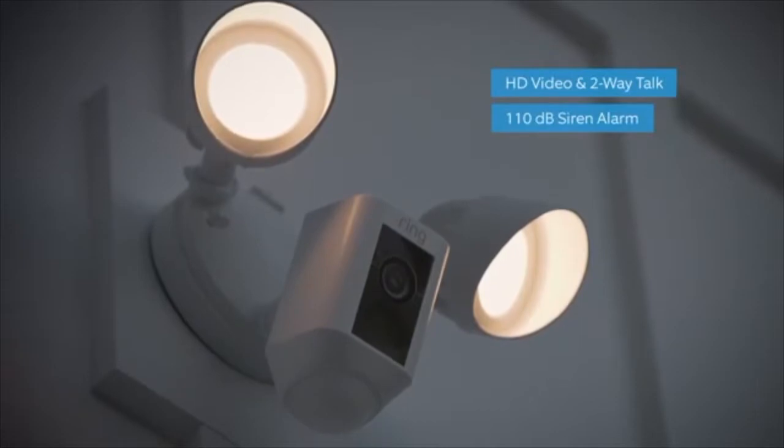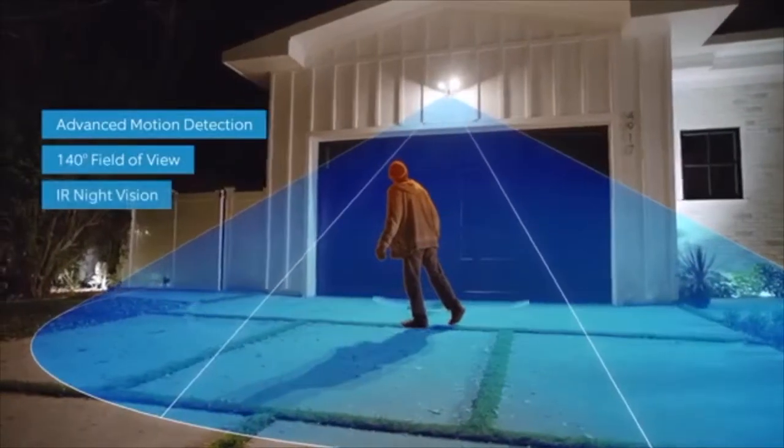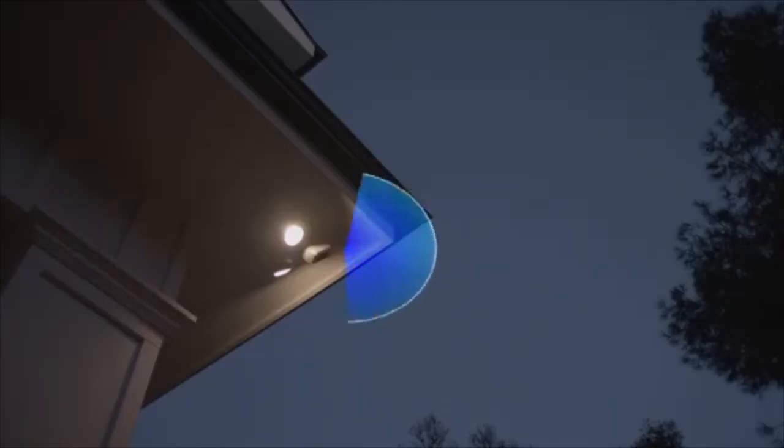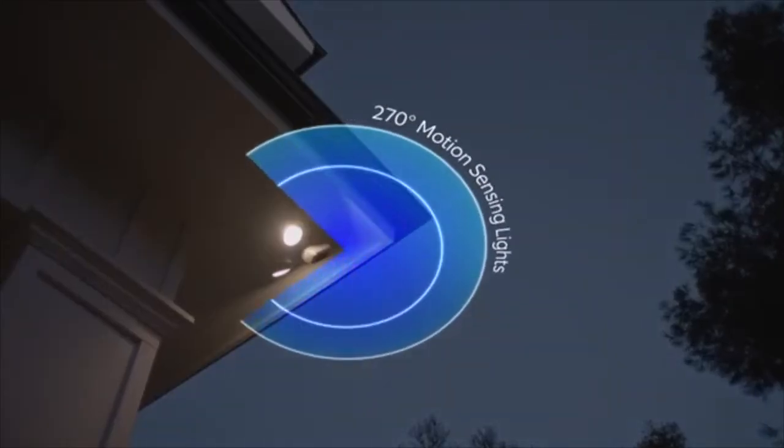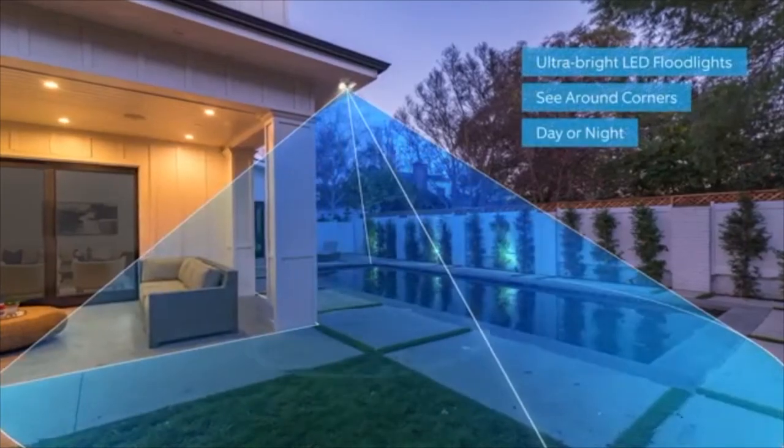Floodlight Cam is the ultimate in proactive home security. A 140-degree HD camera detects motion and captures video with two-way talk. And two high-beam LED smart lights illuminate every corner of your home for optimal video quality.